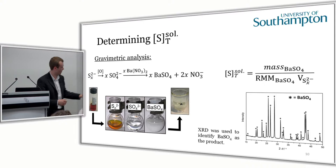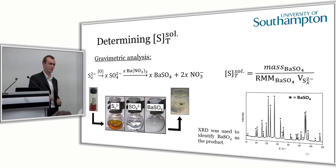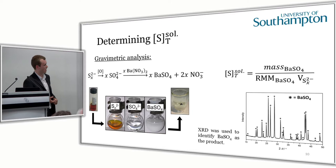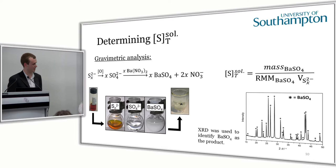To determine the total sulfur concentration in our polysulfide electrolyte solutions, we developed a gravimetric analysis method. We take a known quantity of our polysulfide electrolyte solution — that typical orange color — oxidize it to sulfate, at which point it goes colorless, and then precipitate it as barium sulfate. Barium sulfate is practically insoluble in water and is heavy, so we collect it using a Gooch crucible and obtain a mass. Knowing the volume of polysulfide solution analyzed, we determine the total sulfur concentration. The barium sulfate precipitate was identified using XRD.